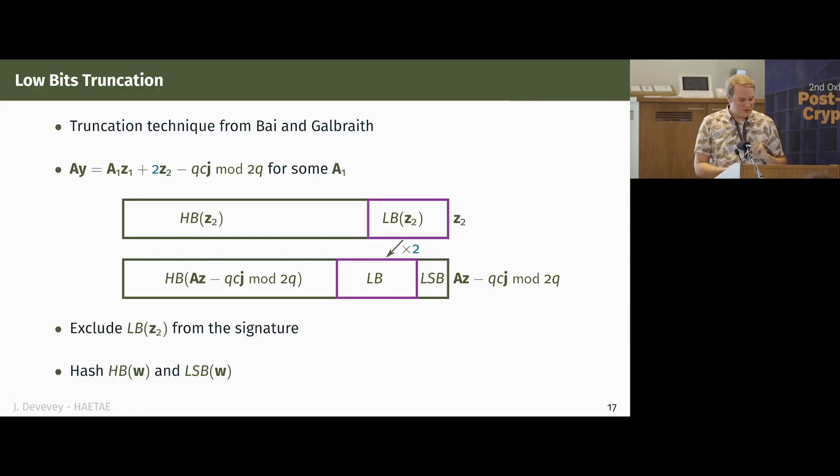The final thing I want to describe in the algorithm is that we have two ways of making the signature a bit smaller. The first one is a very standard technique that was introduced by Bai and Galbraith for those Fiat-Shamir with aborts over Euclidean lattices, and it relies on the fact that we have an identity in the public matrix A. So the part of the signature that's multiplied by this identity, if you are to get rid of the low bits of those coordinates, then you almost didn't change the high bits of the result. So you can get rid of them in the signature.